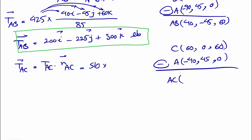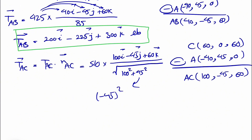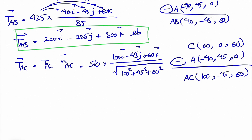To find vector AC: X component is 60 − (−40) = 100, Y component is 0 − 45 = −45, and Z component is 60 − 0 = 60. So AC = 100i − 45j + 60k. The magnitude is the square root of 100² + 45² + 60². Note that the minus sign on 45 disappears when squared.